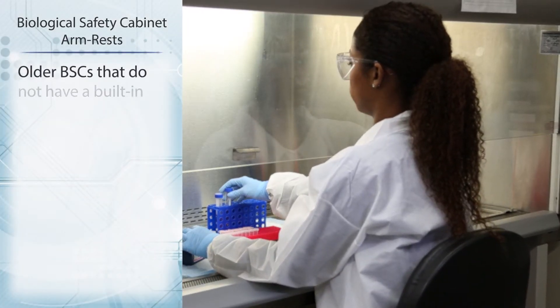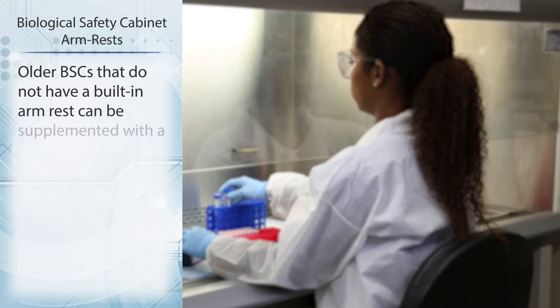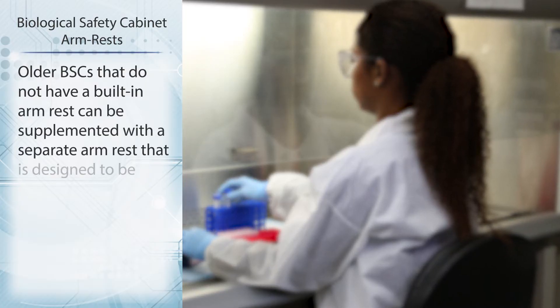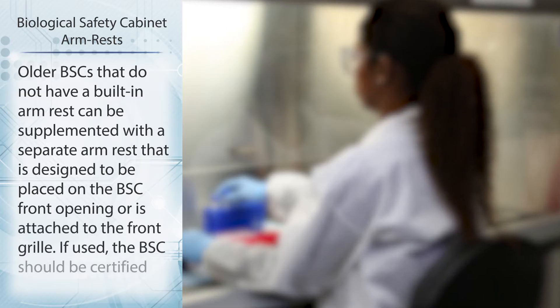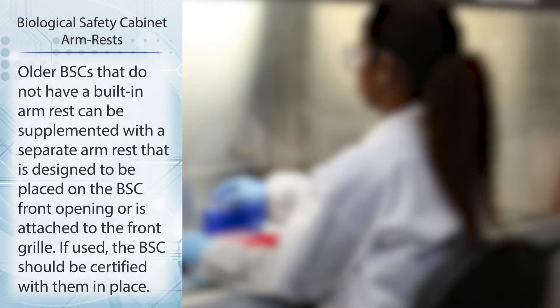Older BSCs that do not have a built-in armrest can be supplemented with a separate armrest that is designed to be placed on the BSC front opening or is attached to the front grill. If used, the BSC should be certified with them in place.